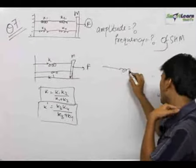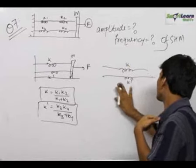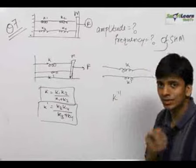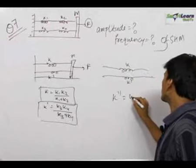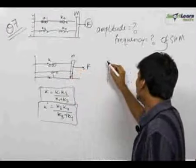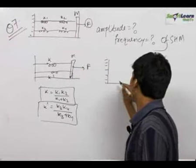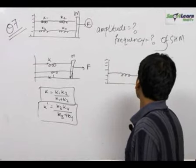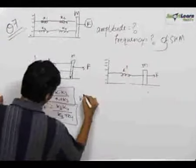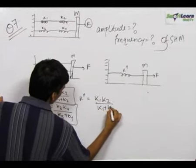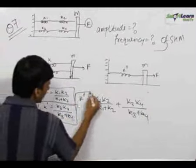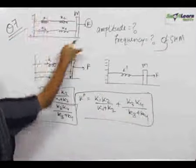Whenever the springs are in parallel, we apply the formula for combination of resistances in series. So the resultant spring constant — a single spring which can replace these two springs — is equal to k plus k dash. So this whole system can be converted to a single spring and a mass with a constant force F acting, where k double dash is equal to k1·k2 upon k1 plus k2, plus k3·k4 upon k3 plus k4.